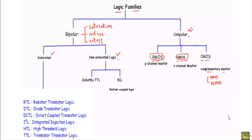Non-saturated logic means the bipolar junction transistor will operate either in the cutoff mode or in the active region. Non-saturated logic circuits are generally faster than saturated logic circuits because the transistor will not saturate during operation. Non-saturated logic is further classified into two types: Schottky TTL (Schottky transistor-transistor logic) and ECL (emitter-coupled logic). I will show you the operation of an ECL inverter circuit and ECL NOR and OR gates.